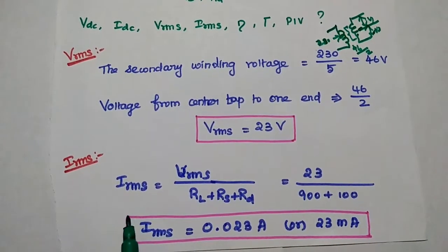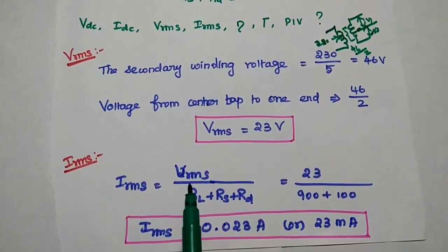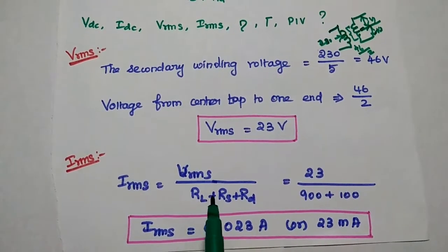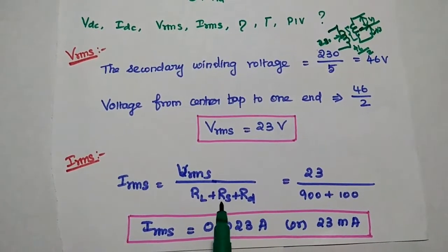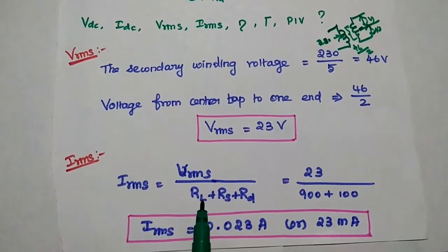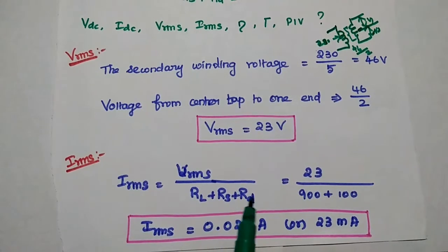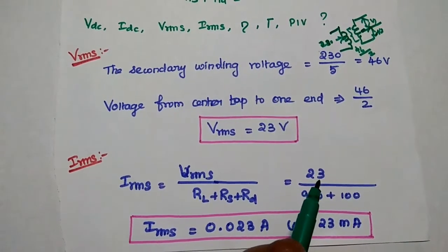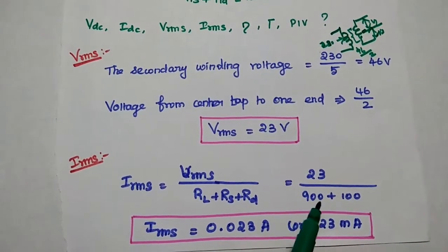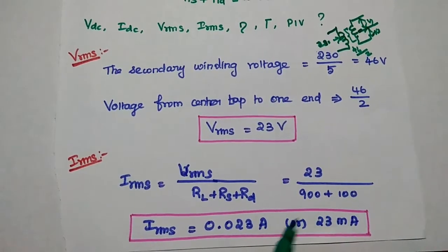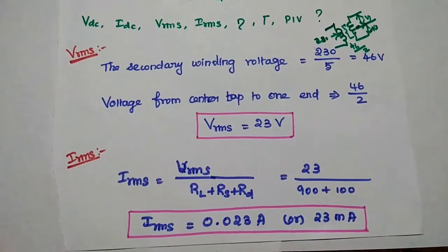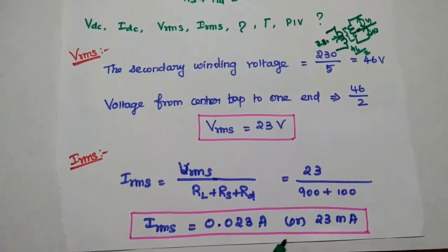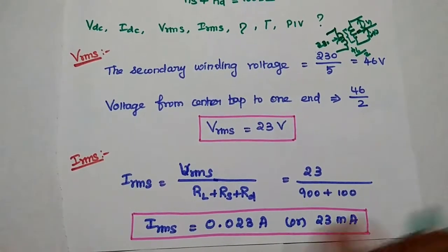We can now find Irms, which equals Vrms divided by the sum of all resistance values: Vrms ÷ (RL + RS + RD) = 23 ÷ (900 + 100) = 0.023 A, or 23 milliamps.